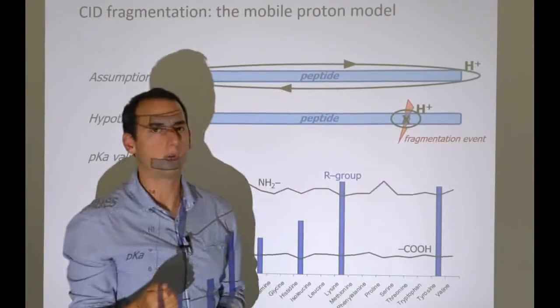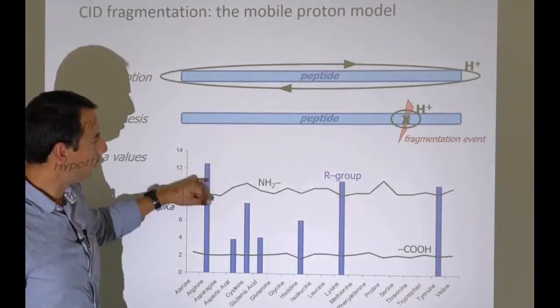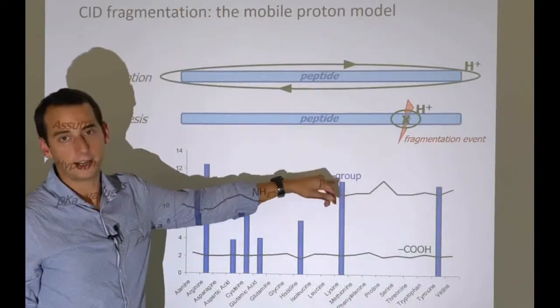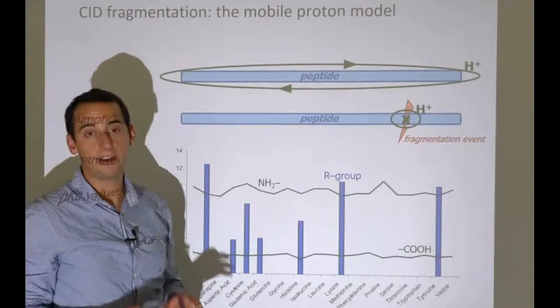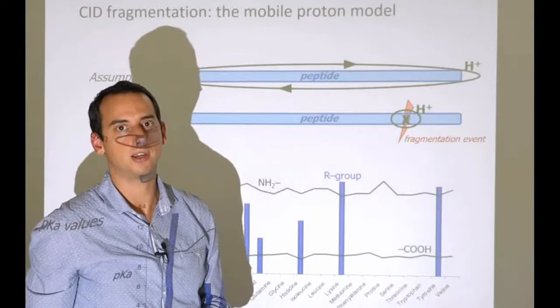If there's an arginine at the end—and remember, trypsin cleaves after lysine or arginine, so the vast majority of our peptides end in these—the proton will be very strongly localized there. Arginine is about two units of pKX higher than lysine, which is a hundredfold more basic. So it's a hundredfold better location for a proton.